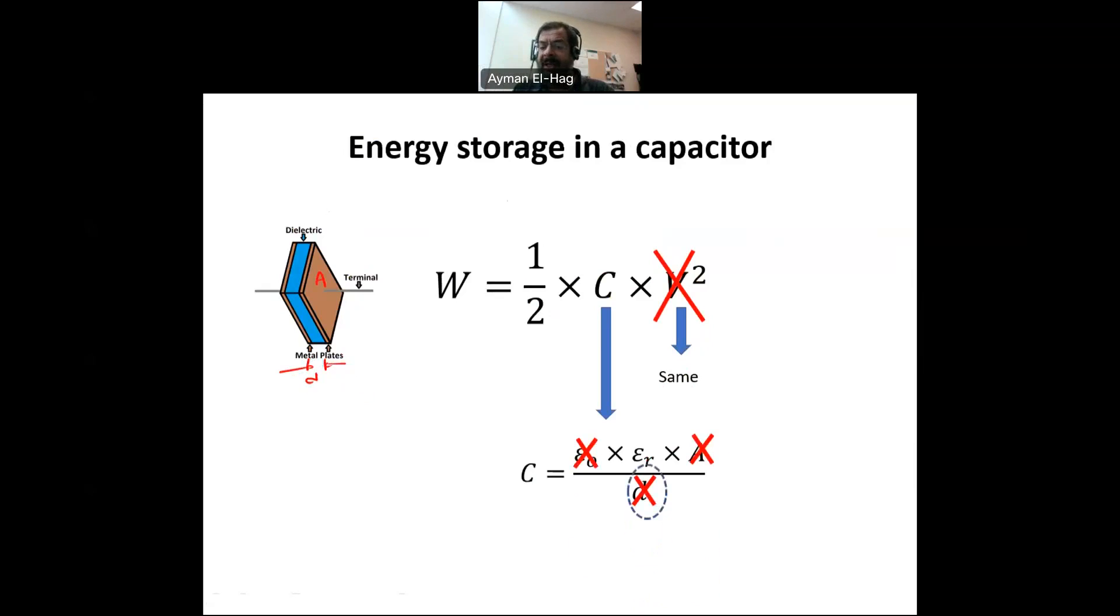So, the only thing left is epsilon R. Indeed, epsilon R is the one that is responsible when you have two identical capacitors apply the same voltage. It's the only reason why we have differences in the energy storage. This is why some people define the dielectric constant as the ability of the material to store electric energy, which is correct. However, this does not give us the reason why this is happening. This is the impact of the dielectric constant, but the why still we did not answer it.